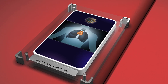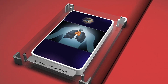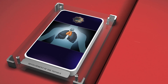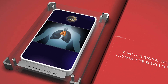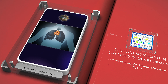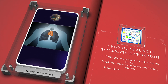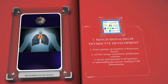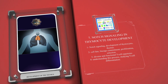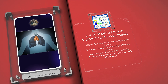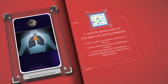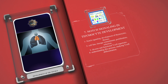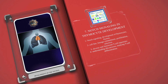Notch signaling is crucial for the development of thymocytes in the thymus. It controls cell fate, lineage commitment, proliferation, and selection, leading to the formation of a diverse and functional T-cell repertoire. Understanding this process is important for studying T-cell differentiation.